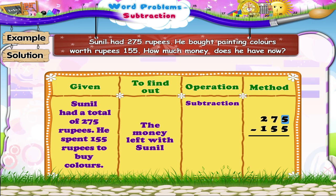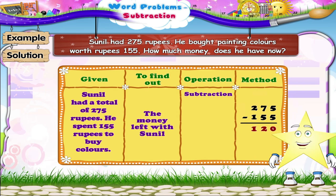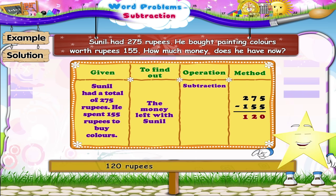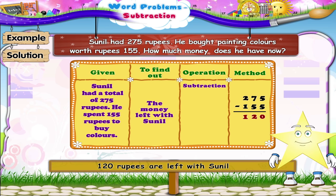5 units minus 5 units gives 0 units. 7 tens minus 5 tens is 2 tens. 2 hundreds minus 1 hundred is 1 hundred. So we can say that 120 rupees are left with Sunil. Remember, Stari — subtraction and addition both are required in our everyday life.